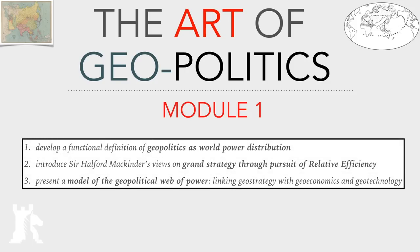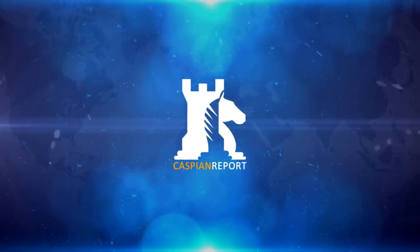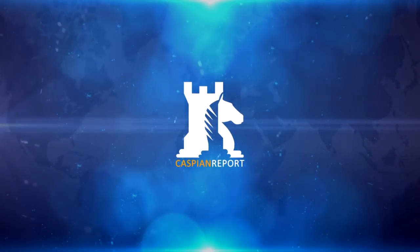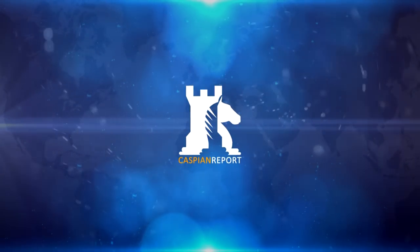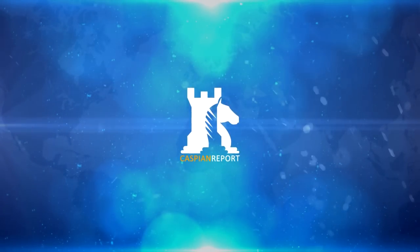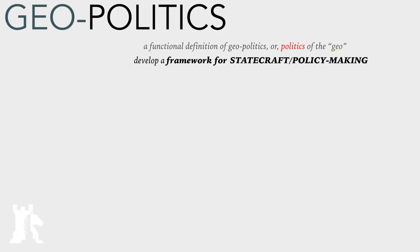In module one we have three goals. We will develop a functional definition of geopolitics as world power distribution, then we will introduce Halford Mackinder's views on grand strategy through the pursuit of relative efficiency, and finally we will link it all together in a model of the geopolitical web of power, which links geostrategy with geoeconomics and geotechnology. I am your host G.S. Goraya — welcome to the Caspian Report series on the Art of Geopolitics.